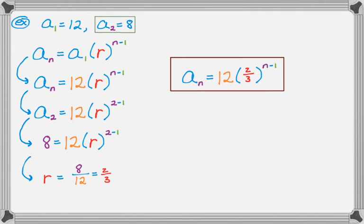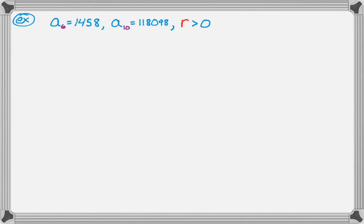Let's do another example where we don't have the first term, and we don't have consecutive terms. So this one's potentially much harder, but it's actually not harder at all. So we are told that a sub 6 is 1,458, a sub 10 is 118,098. And for the purpose of the problem, we're going to say r is greater than 0, and I'll explain why later on. We just have this restriction that r has to be greater than 0.